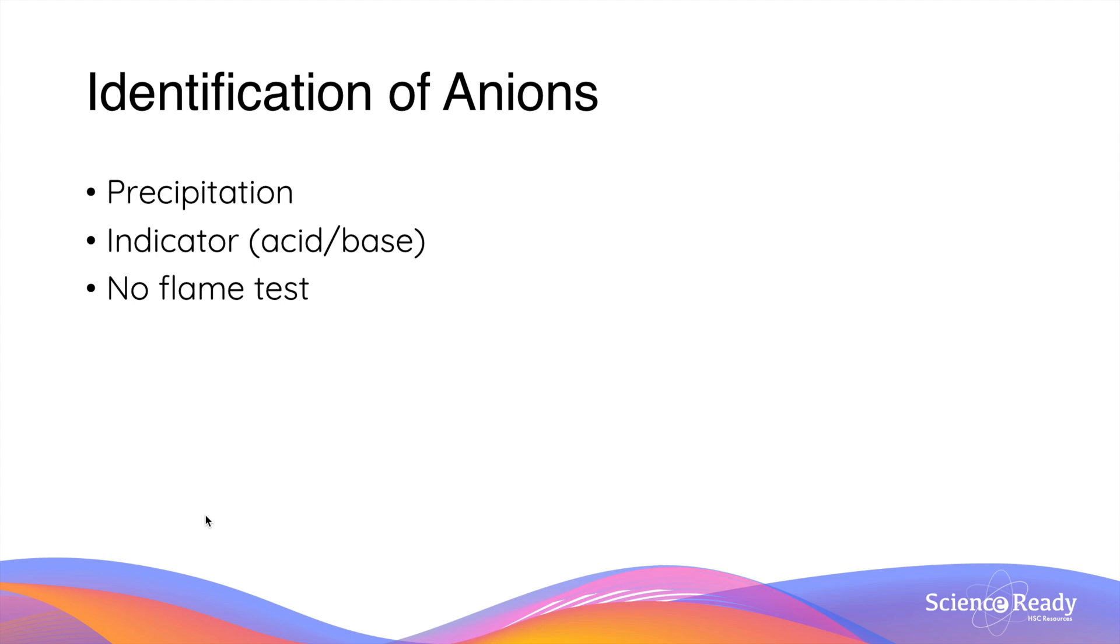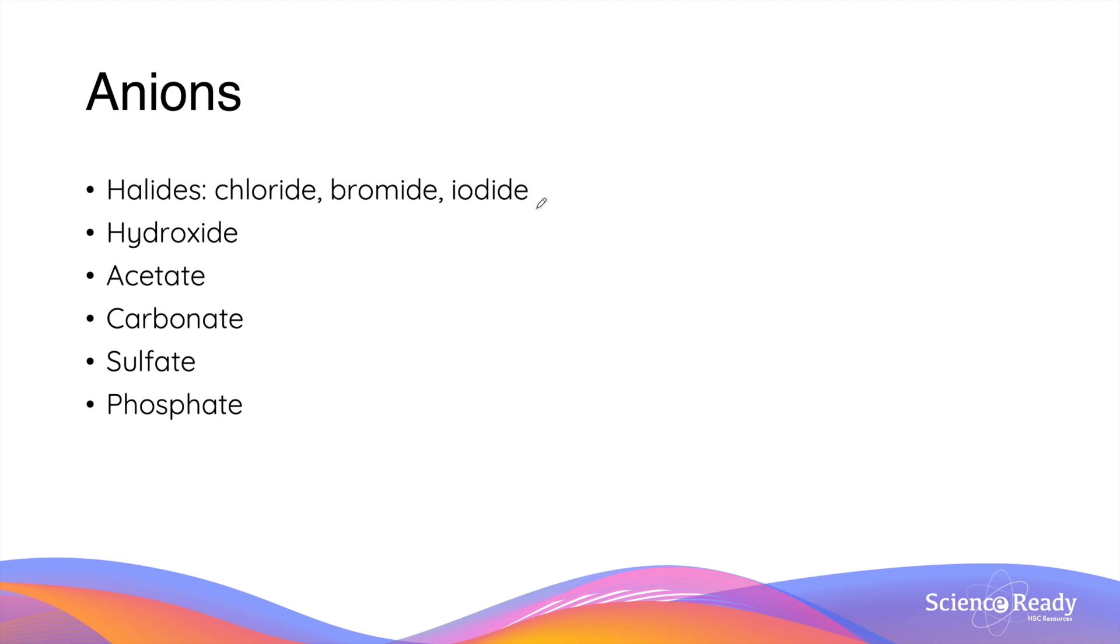There are two ways we normally use to identify anions: precipitation and the use of an indicator to detect the presence of an acid or base. It's important to remember that the flame test is not used for anions as they are only applicable for metal cations.